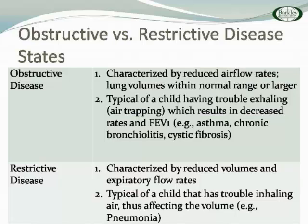The normal for FEV1 is at least 80%. When we look at stepwise management for asthma you'll see values less than that. Examples of obstructive disease include asthma, chronic bronchiolitis, and cystic fibrosis. Restrictive disease means reduced volume of air and expiratory flow rates — the child is having trouble inhaling, affecting volume. A child with pneumonia breathes very shallow; they can't bring enough air in. They're restricted.